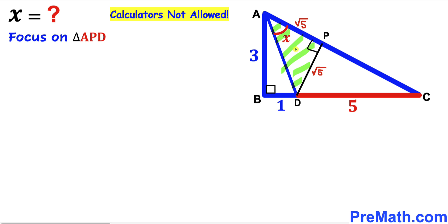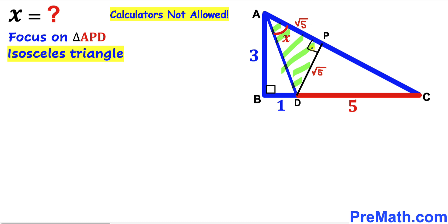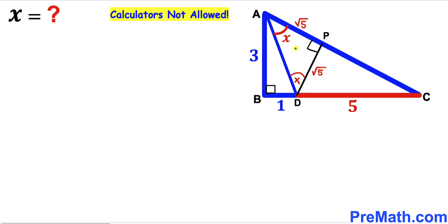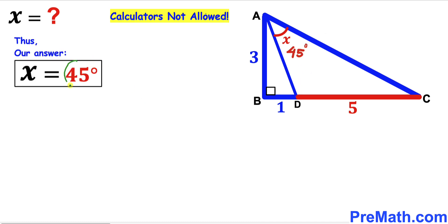In the final step, looking at right triangle APD, we see it is isosceles since AP = c = √5 and PD = y = √5 are equal. Because triangle APD is isosceles, the base angles are congruent, so the angle at A equals the angle at D, both equal to X. Since the sum of interior angles is 180° and this is a right angle, angle X = 45°. Therefore our final answer is X = 45 degrees.